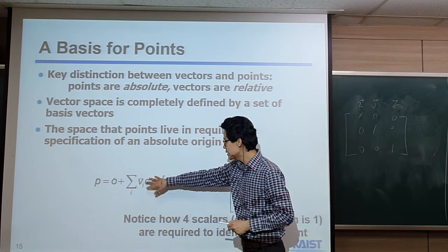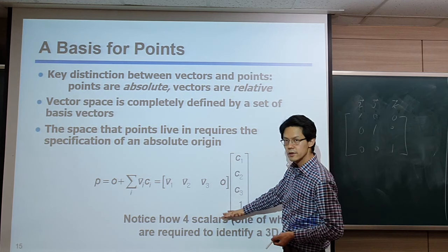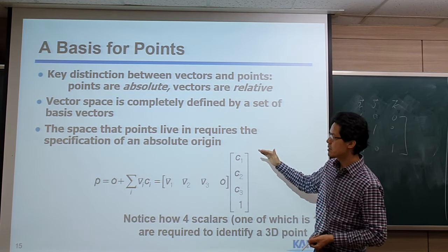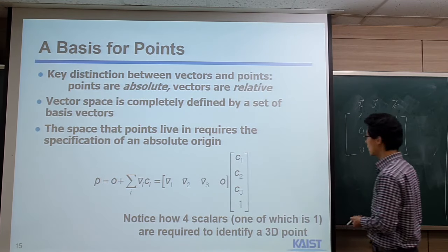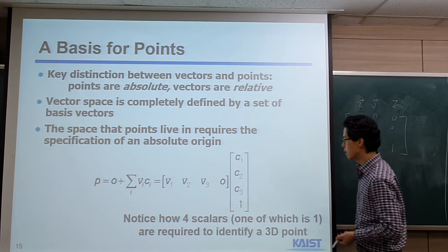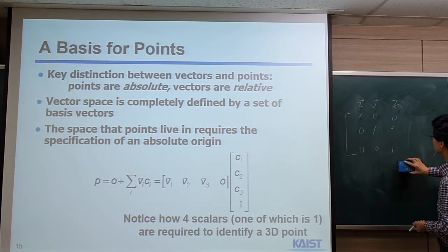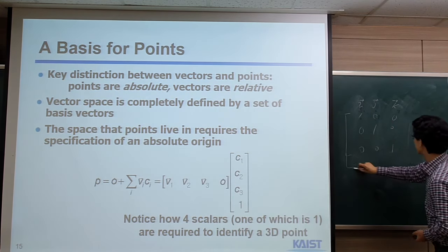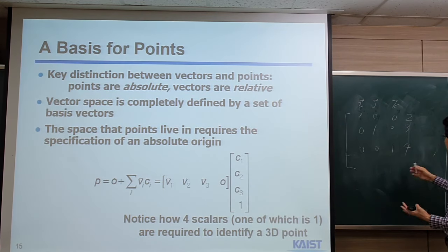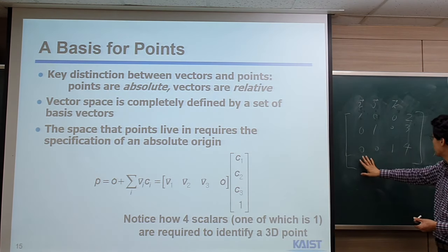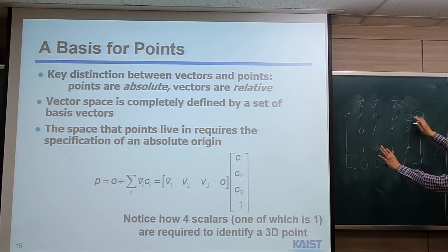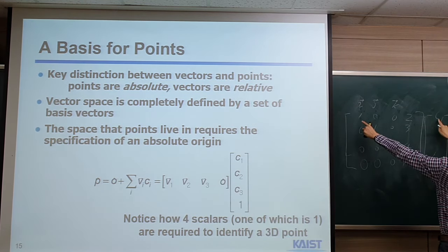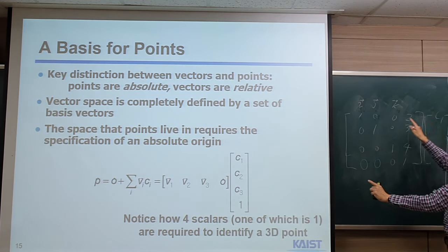If we expand this formulation into matrix form, for the 3D case with three basic vectors and one origin, it becomes a 4×4 matrix. This vector is column-major. If I expand the origin vector, we can see the same structure but now it's a 4×4 matrix. The origin can be arbitrary — for example (2, 3, 4) or similar. For the coordinate vector, we have C1, C2, C3, and 1. So this is the 4×4 matrix multiplied by the 4×1 coordinate vector.